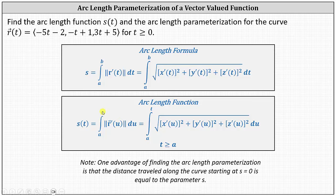Because the upper limit of integration is t, we know the final result will be a function of t. But because of this t, we cannot have a function of t as the integrand, and therefore we perform a change of variables to the vector valued function R of t. Notice the change of variables was to let t equal u.